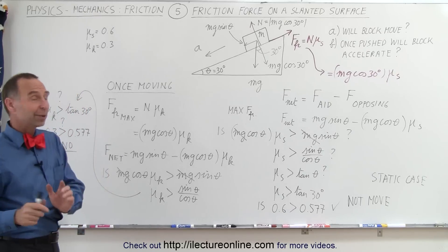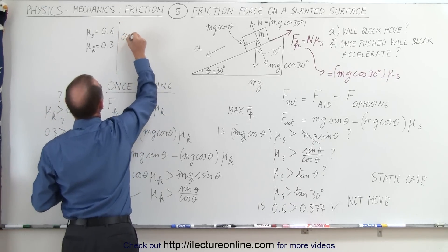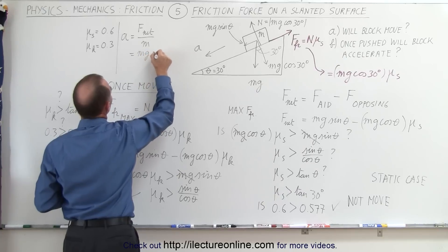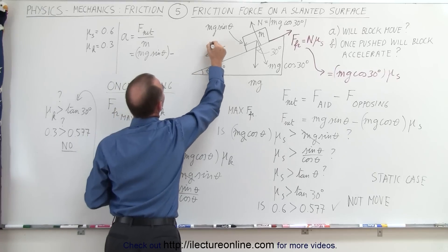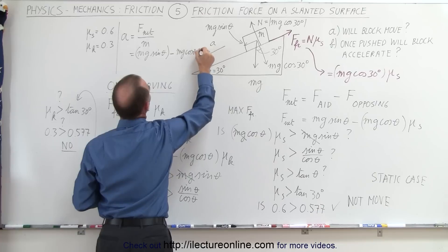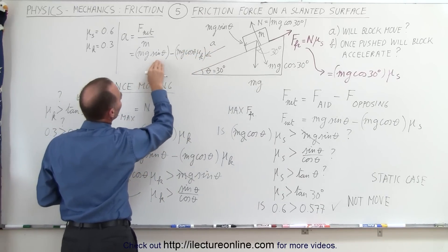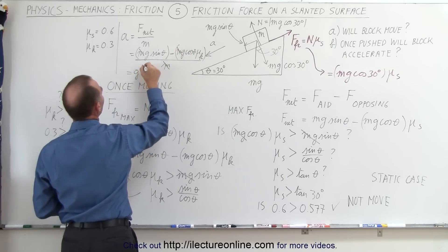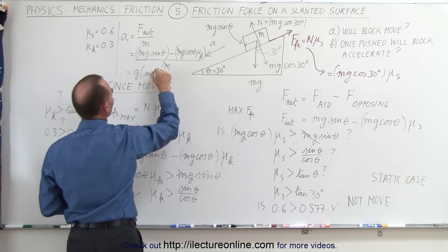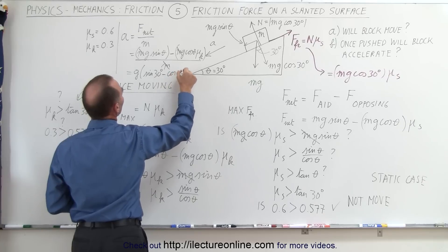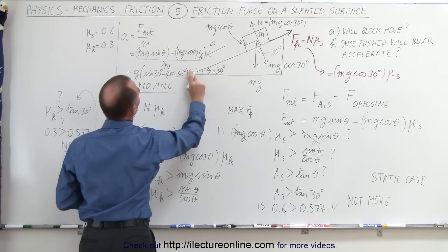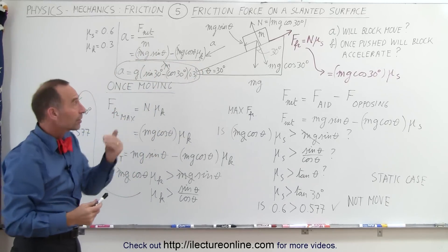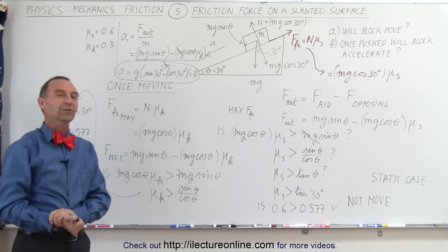If you want to know the acceleration: a = F_net / m = (mg sine theta minus mg cosine theta times mu_k) / m. The m's cancel, giving a = g times (sine 30° minus cosine 30° times mu_k), where mu_k = 0.3. This is how we find the acceleration once we confirm that the force pulling the block down exceeds the maximum kinetic friction force, and that's how it's done.